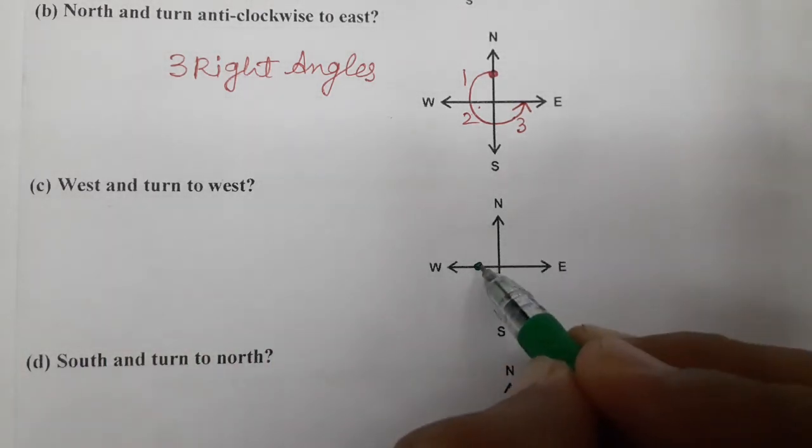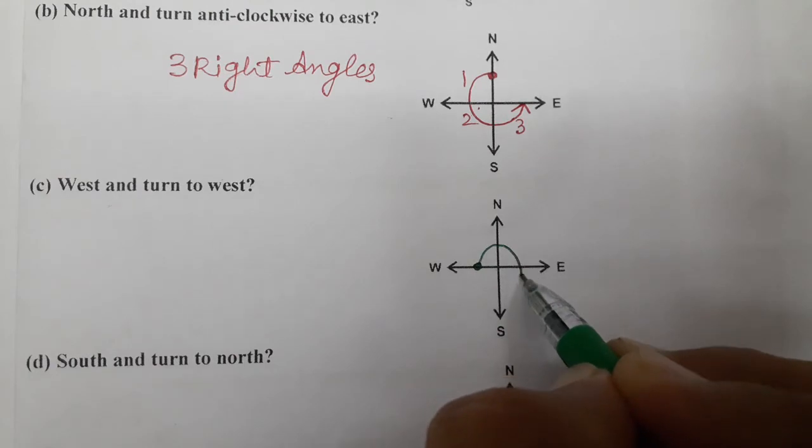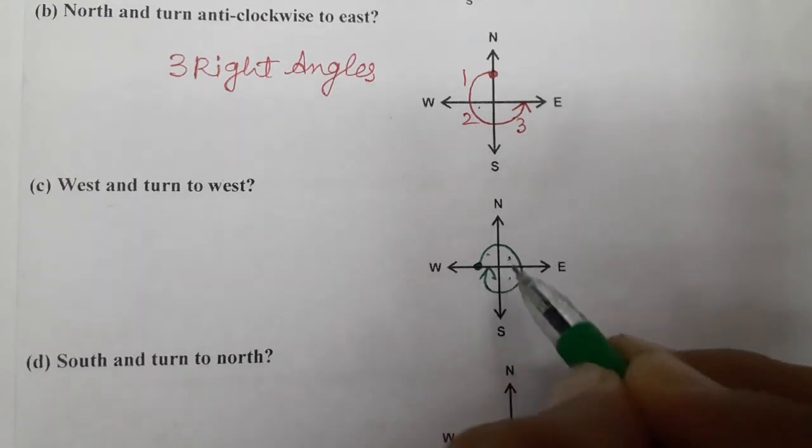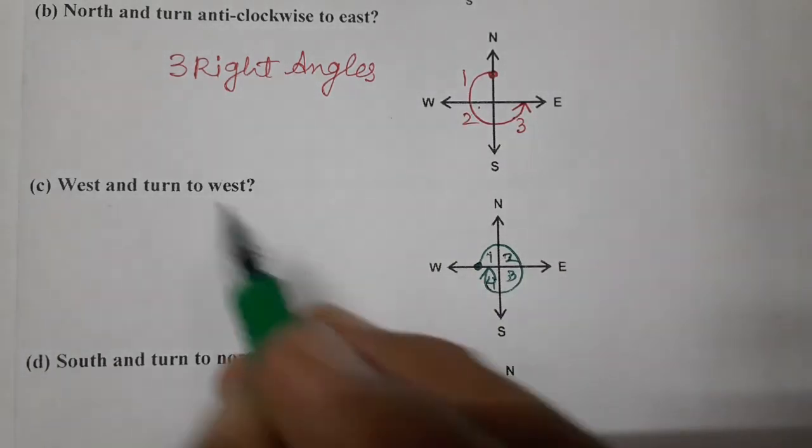So let's move. First of all, clockwise. So this is clockwise. One, two, three, four. One, two, three, four. So four right angles.